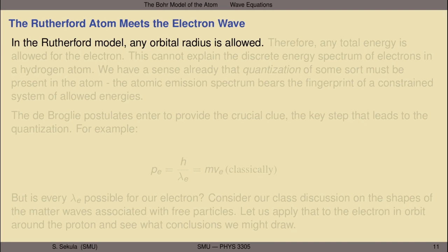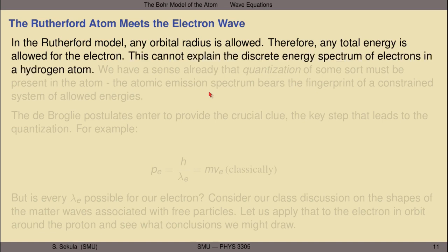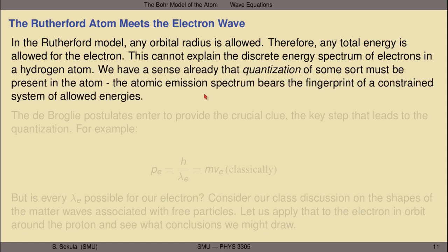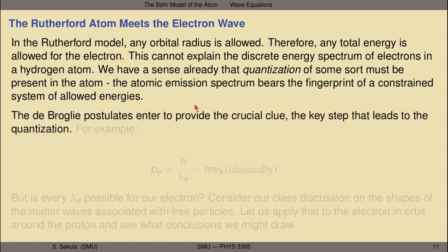How do we get modern concepts — like the fact that the electron is actually a wave and not a point-like particle — into this thing? We see the problem already with the Rutherford model: it's not going to explain the hydrogen emission spectrum, because in the Rutherford model, any orbital radius r is allowed. You can put any r in there and you'll get an energy out. Because any total energy is allowed for the electron, this cannot explain the discrete energy spectrum of electrons in a hydrogen atom. We already have a sense that quantization of some sort must be present in the atom. The atomic emission spectrum bears the fingerprints of a constrained system with only specifically allowed energies determined by those constraints. The de Broglie postulates enter to provide the crucial missing clue that will help us understand this whole problem.